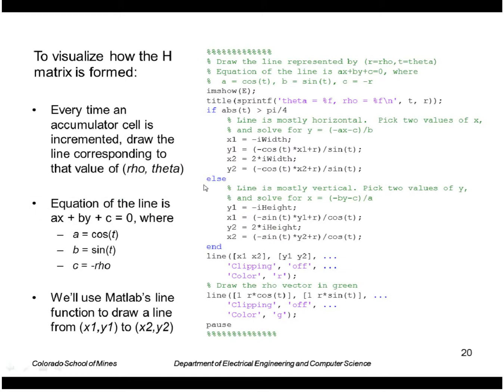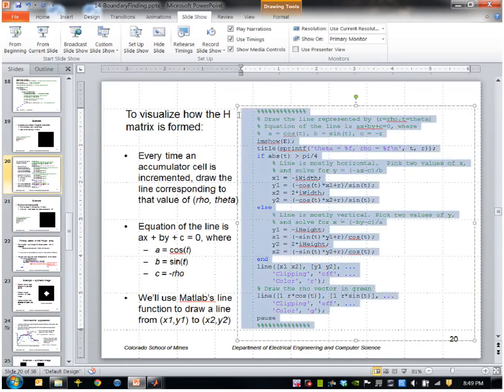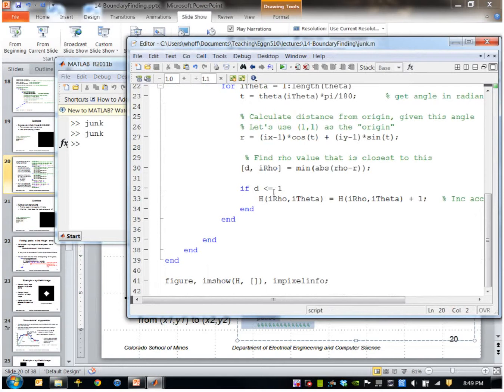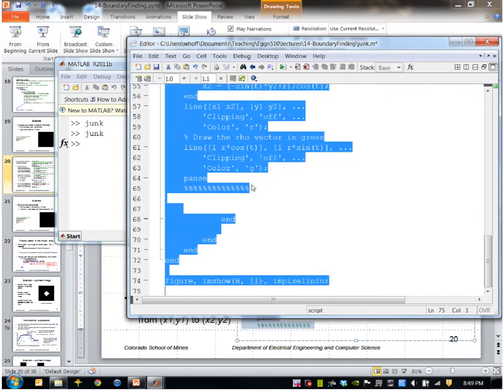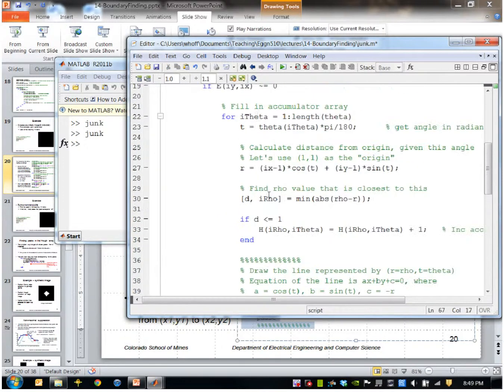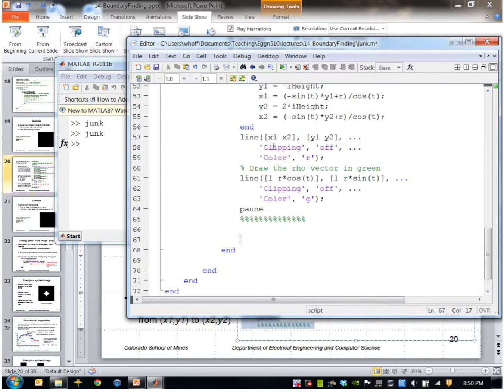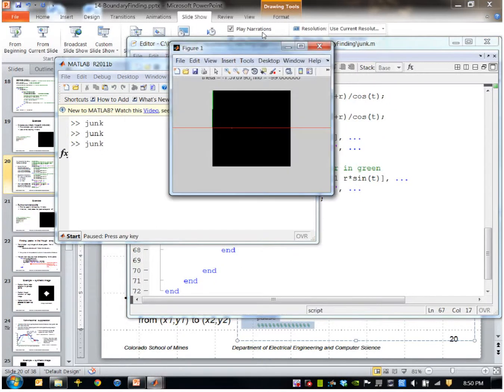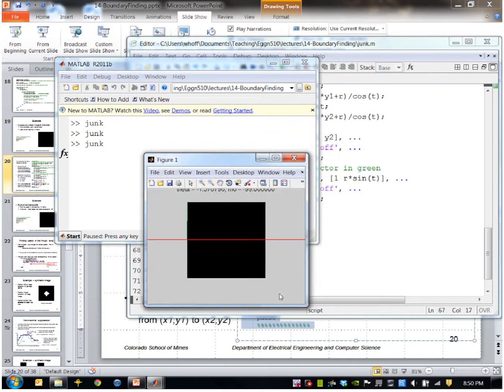So I'll go ahead and paste that in. And we'll put that right inside the innermost loop here. I'll just clean that up a bit. So basically inside the innermost loop, it calculates rho and theta and draws the line and pauses.